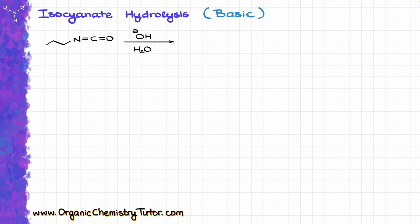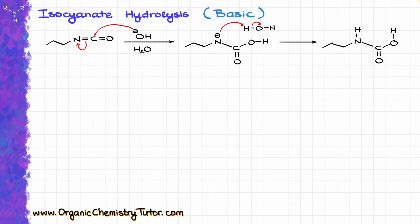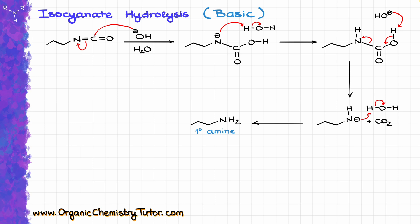This hydrolysis can also happen in basic conditions. In basic conditions, we start by taking hydroxide and attacking the carbon of the isocyanate. One resonance structure has a negative charge on nitrogen, and from there we bring water to protonate that nitrogen, bringing us back to carbamic acid again. Then we deprotonate using OH⁻, giving us our amide, CO2, and water — and like in the previous case, nitrogen immediately grabs a proton, giving us our primary amine as the final product.